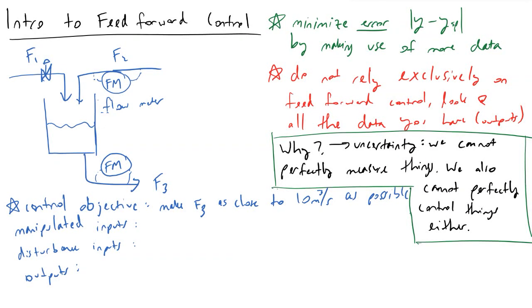In this video I wanted to introduce feedforward control, and the reason we care so much about feedforward control is that it will help us minimize error. Error is the difference between the output and the set point that we have for that output. So if we need to make sure that some outlet stream is 10 cubic meters per second and we have only 9 cubic meters per second coming out, we have an error of 1 cubic meter per second.